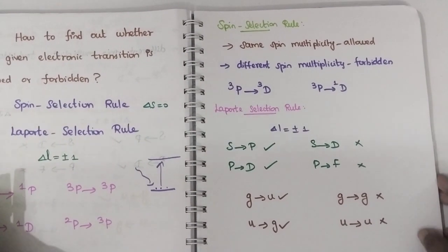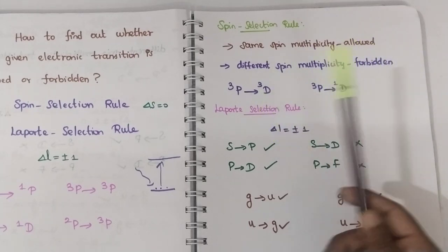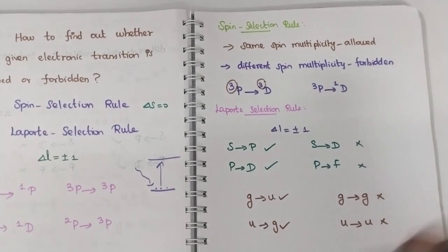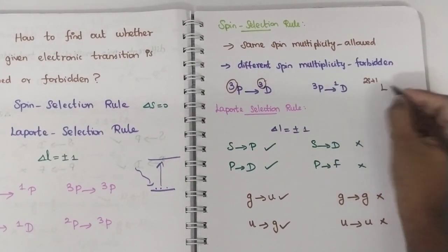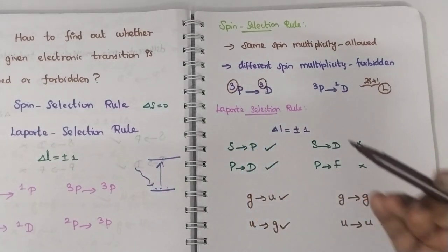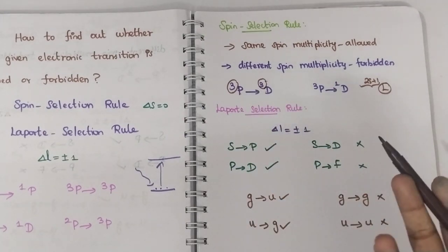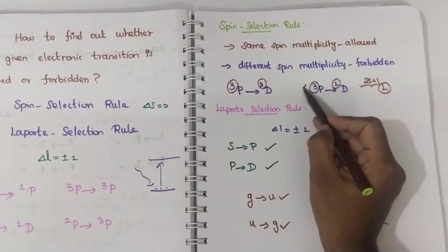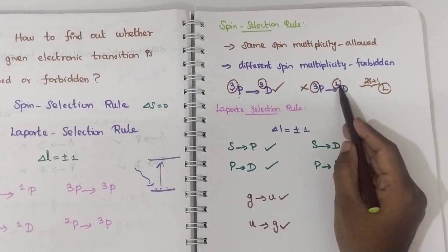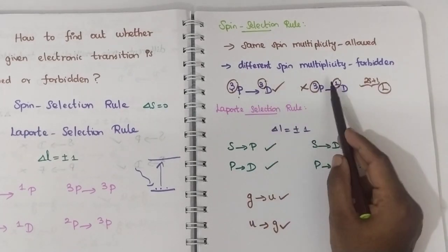First, what is the spin selection rule? It means same spin multiplicity. If the transitions have the same spin multiplicity, then it is allowed. In the term symbol, 2S+1 is the spin multiplicity. Terms having the same spin multiplicity are allowed transitions. If they have different spin multiplicity, the transition is forbidden. For example, triplet to triplet is allowed, but triplet to singlet is forbidden.